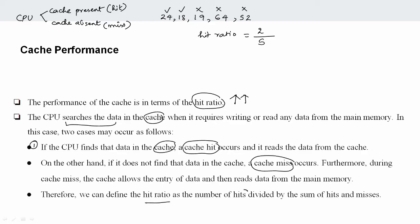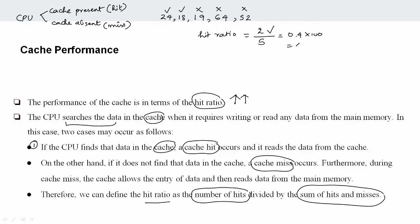So iteration — number of hits. Overall hits is 2 divided by sum of hits and misses. Sum of hits and misses: 2 plus 3 equals 5. So hit ratio is 2 divided by 5 equals 0.4, into 100 equals 40%. So 40% of the time I have a cache hit.